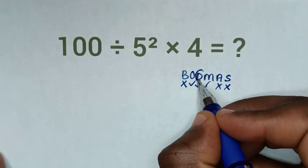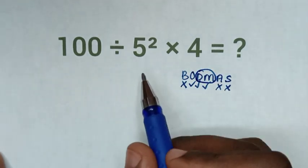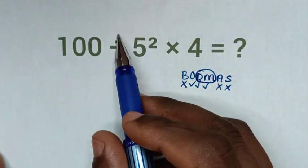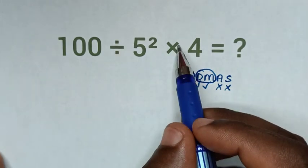Then in here, division and multiplication, we start with what starts first. We start with division, then multiplication.